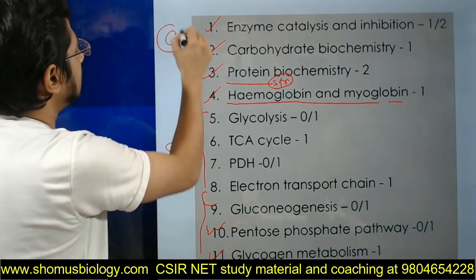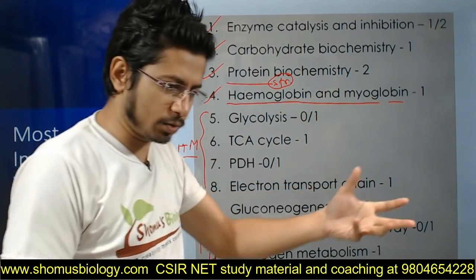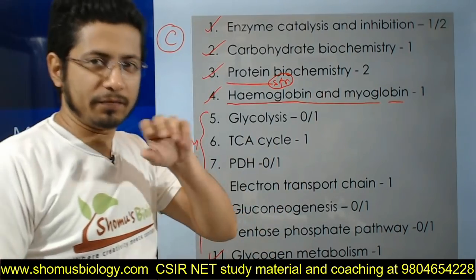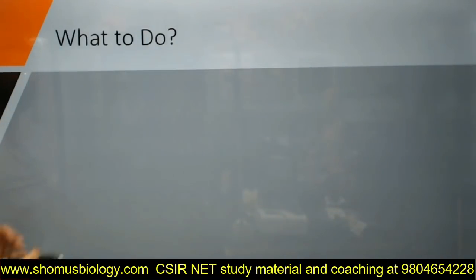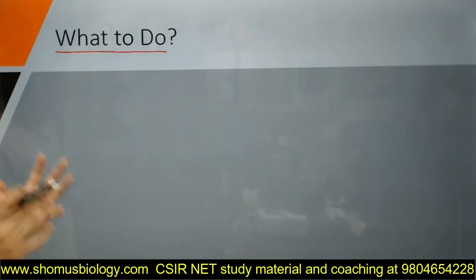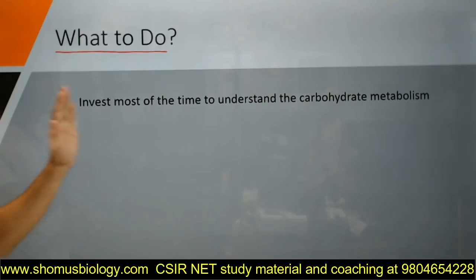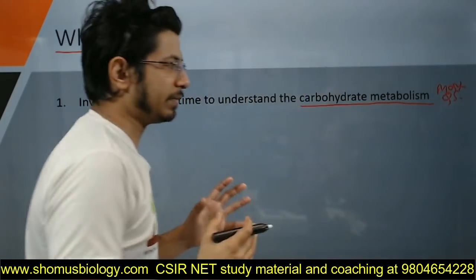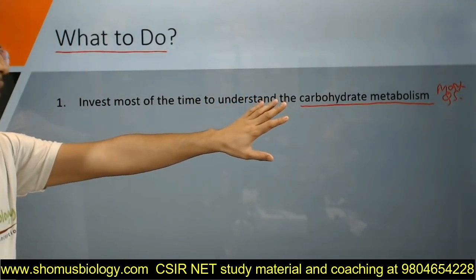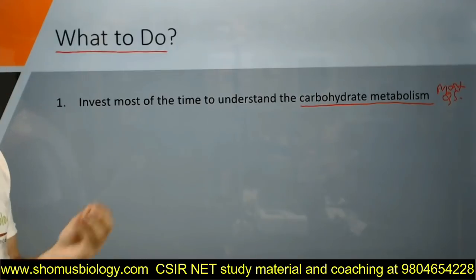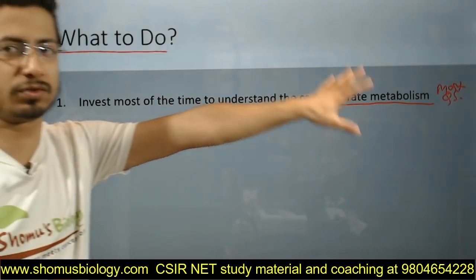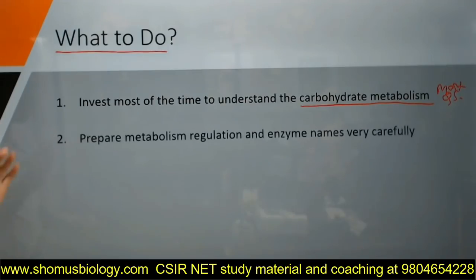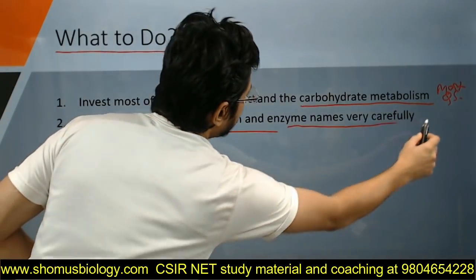Part C consists of 50% of the total marks in the CS and NET Life Science exam, so prepare it very well. Invest most of your time understanding carbohydrate metabolism, as most questions come from that part. If time is limited, focus on carbohydrate structural chemistry, protein structural chemistry, and carbohydrate metabolism. Prepare metabolic regulations and enzyme names very carefully.